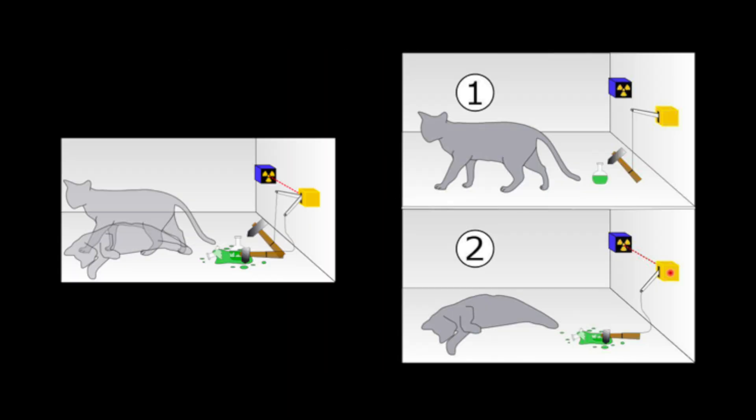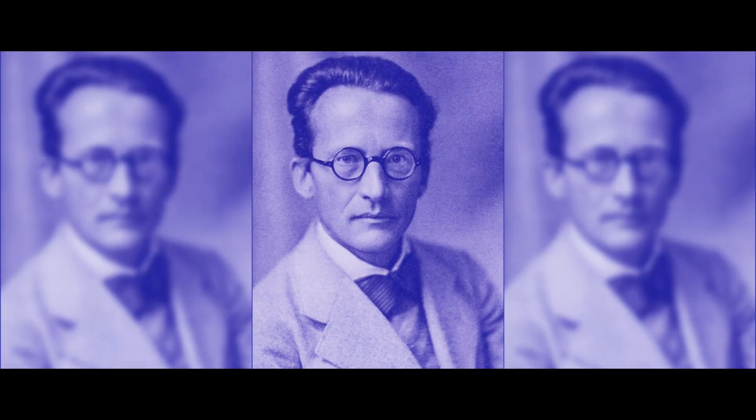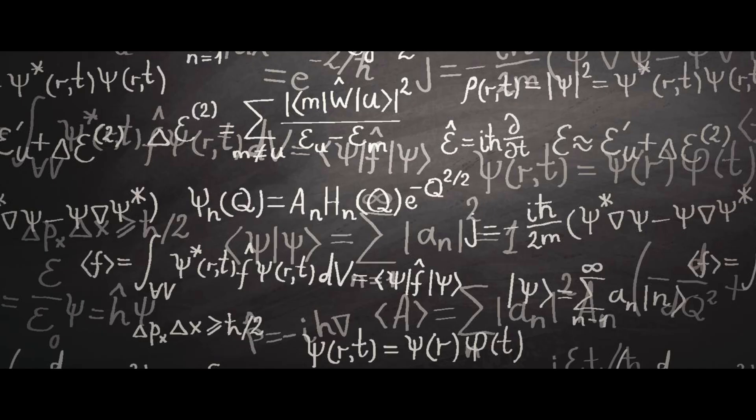A cat is sealed inside a box, accompanied by a Geiger counter, a vial of poison, and a tiny amount of radioactive material. This seemingly absurd scenario is the brainchild of Austrian physicist Erwin Schrödinger, who introduced it in 1935 as a thought experiment designed to illustrate the perplexing principles of quantum mechanics.